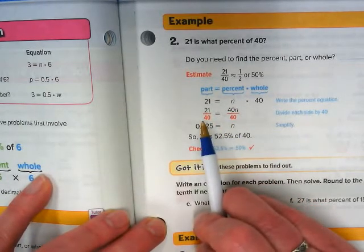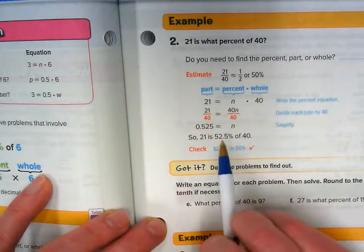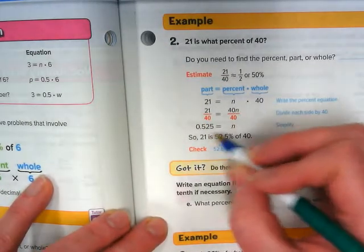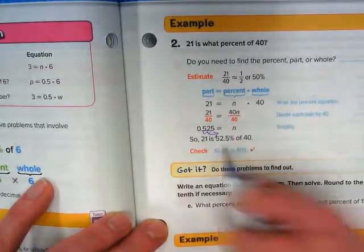So the equation would be 21 is equal to n times 40, or we normally write 40n, and we would divide those both by 40 to get 0.525. And we move that decimal two places to the right, and we would get 52.5%.